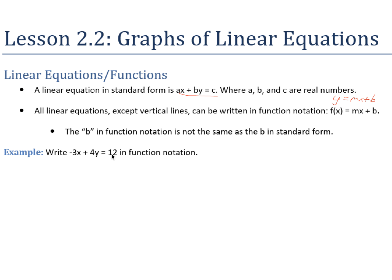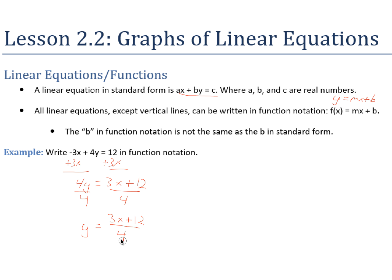Write -3x + 4y = 12 in function notation, meaning we want to solve for y. We add 3x to both sides, giving 4y = 3x + 12, then divide both sides by 4. We get y = (3x + 12)/4, which separates into y = (3/4)x + 3. That is the equation in function notation.